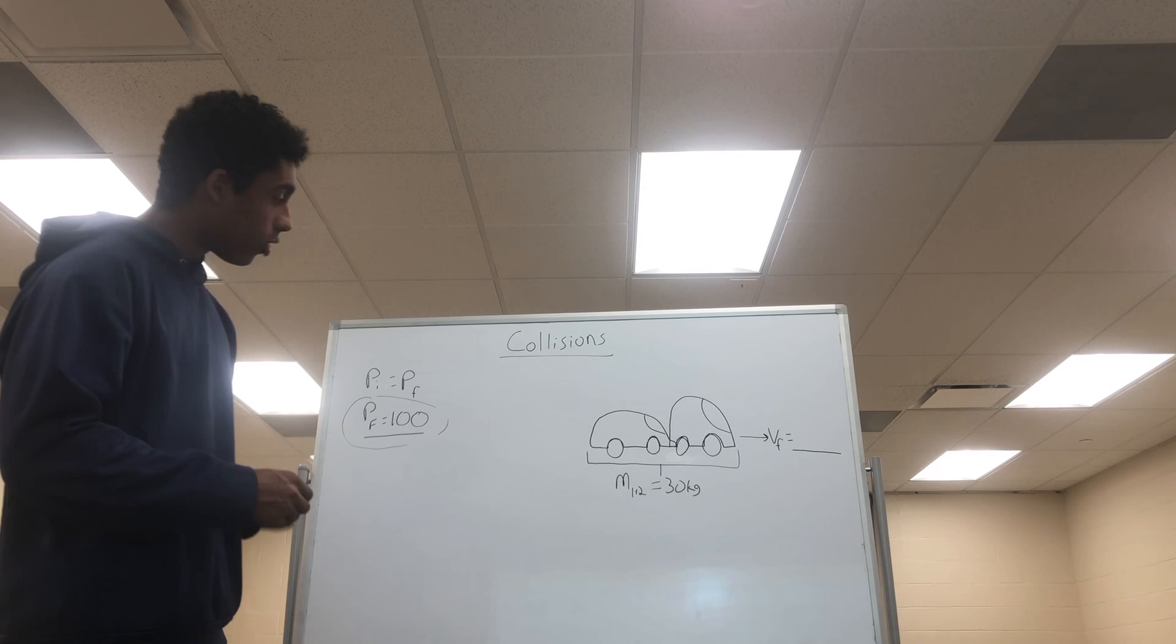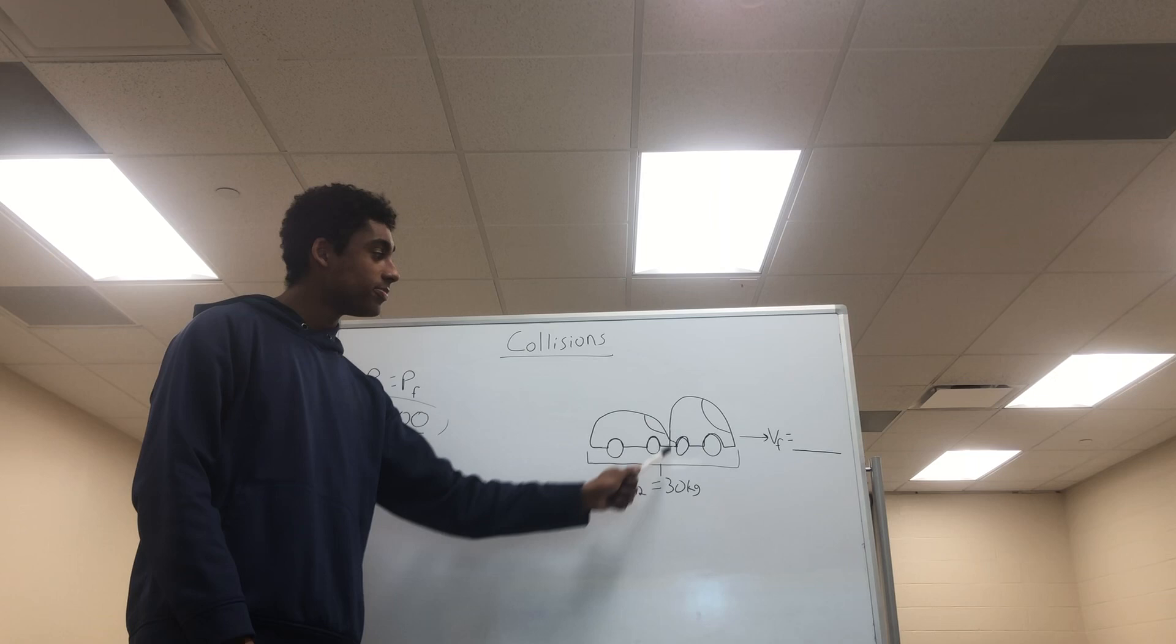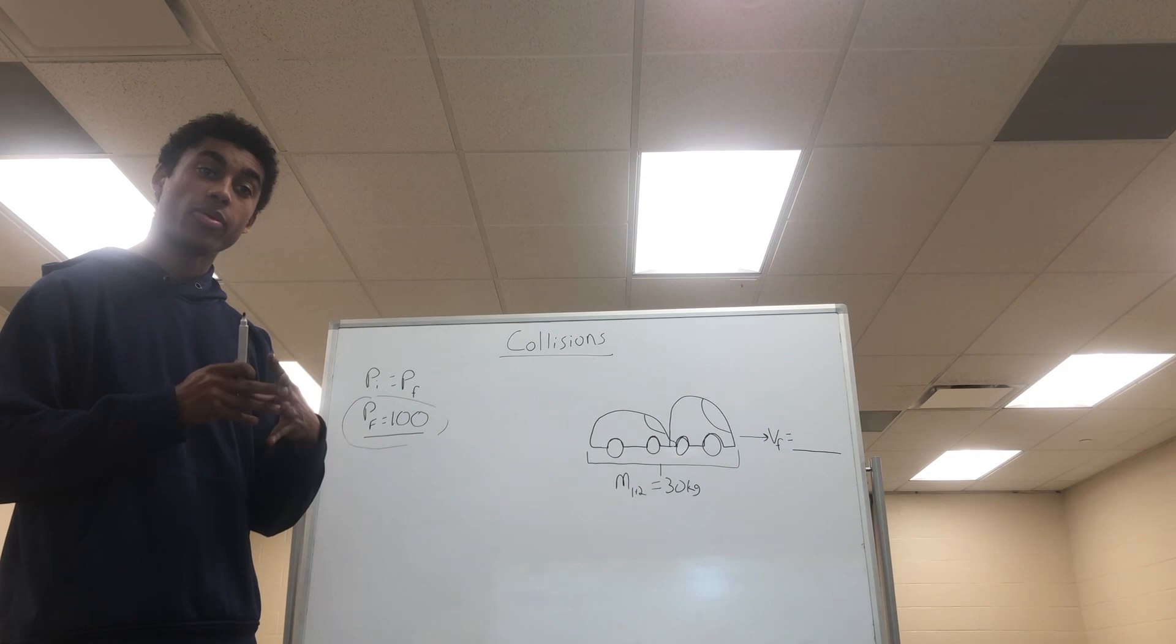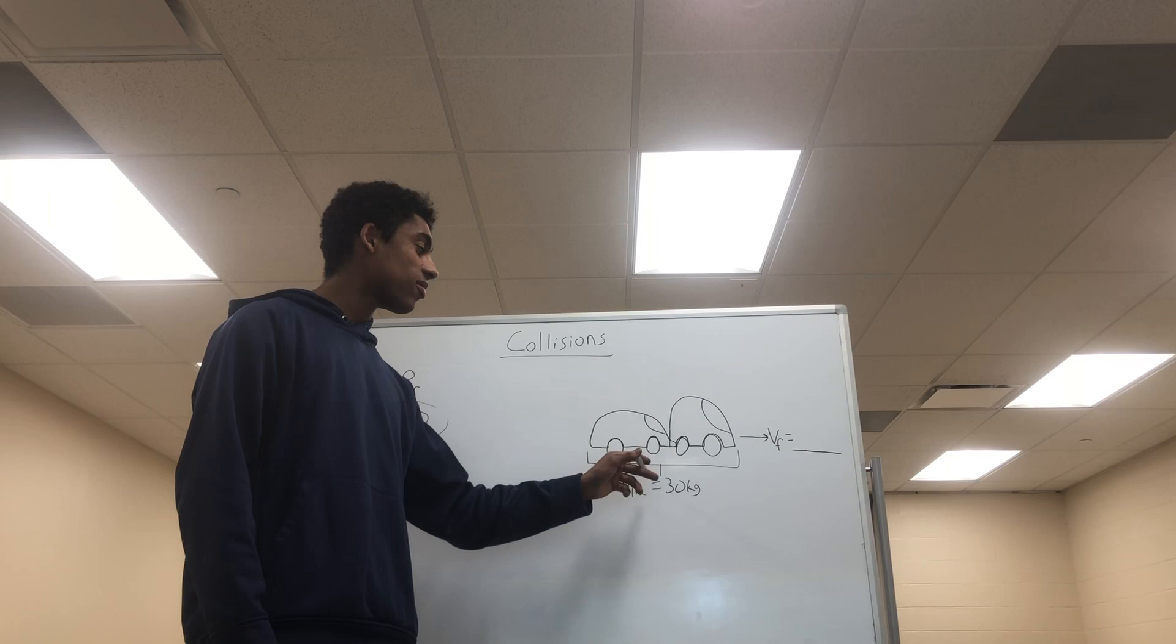We also know that it is an inelastic collision so car one and car two are bound together and traveling at the same velocity. Let's calculate this velocity. The mass of our new object with them bound together will be 20 plus 10, giving us 30 kilograms.